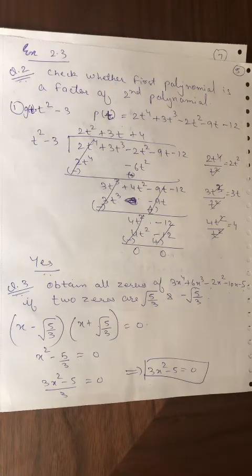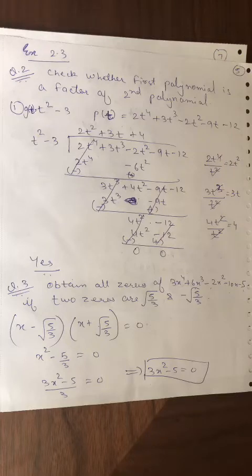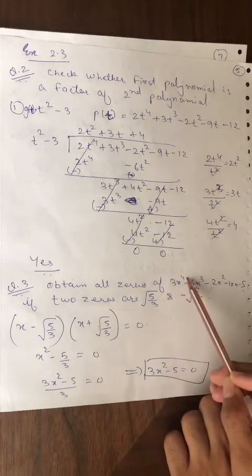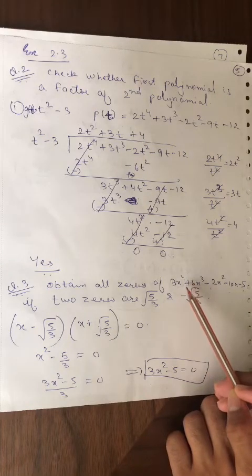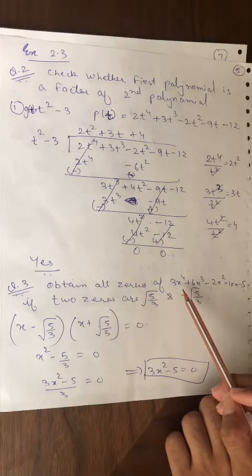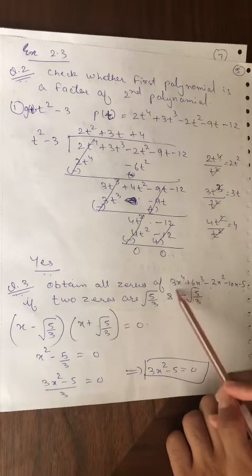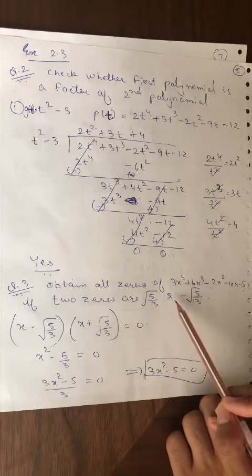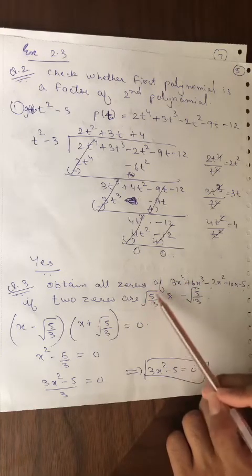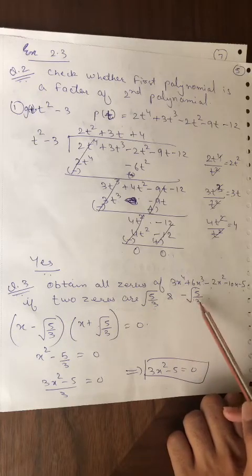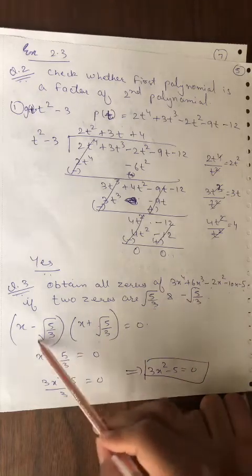Previously in middle term splitting we dealt with x², which has power 2 giving 2 values (quadratic polynomial). Here x⁴ gives 4 values — a bi-quadratic polynomial. Two zeros are already given: √(5/3) and -√(5/3). We need to find the other two. Total 4 zeros, 2 are given.